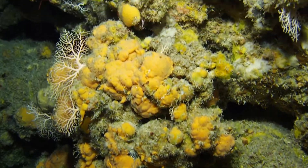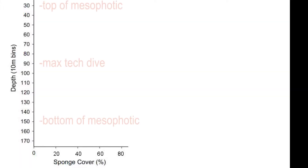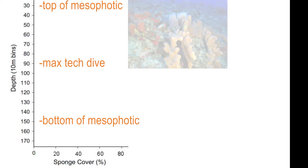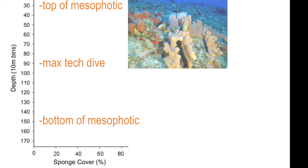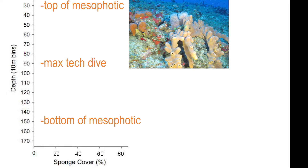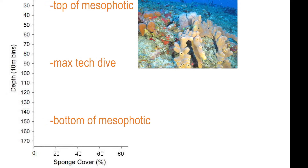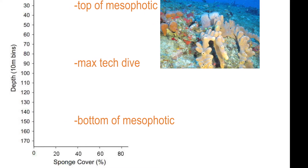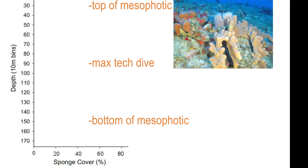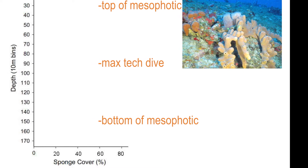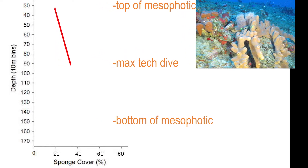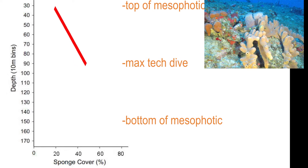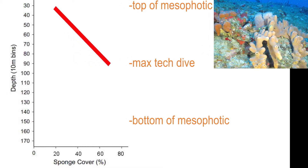Despite these constraints and short working times, the Tech Diving Group considered their surveys representative and reported a surprising abundance of sponges in the top half of the mesophotic zone, with sponge abundance increasing with depth. Here is a summary graph of what the Tech Diving Group reported, with depth on the y-axis and sponge cover on the x-axis. The reefs they studied increased from average values of about 20% of the bottom covered with sponges at 30 meters to about 80% cover of sponges at 90 meters.